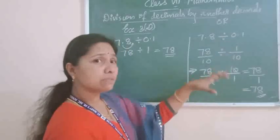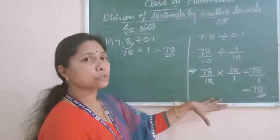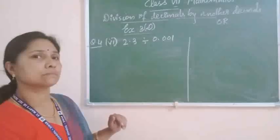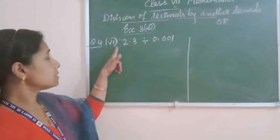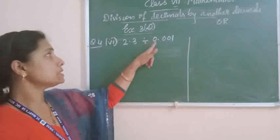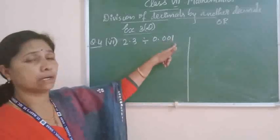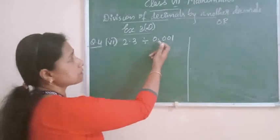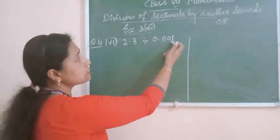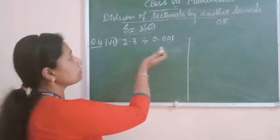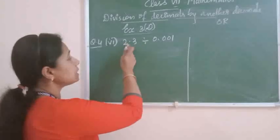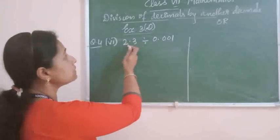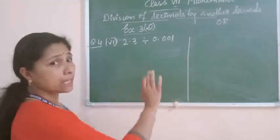So whichever method is easy, that method you can use for doing this type of question. The next question is question number 6: 2.3 divided by 0.001. Here in the divisor, there are 3 digits given after the point, but in the dividend, only 1 digit. The first step is to convert these decimals into like decimals.